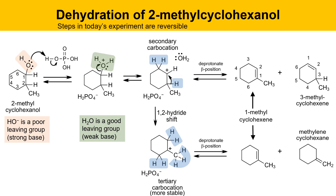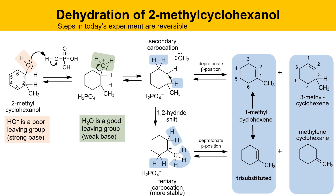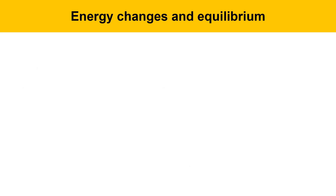These are the alkene products that could be produced in today's experiment. 1-methyl cyclohexene is a tri-substituted alkene, whereas 3-methyl cyclohexene and methylene cyclohexane are both disubstituted alkenes. The tri-substituted alkene is more stable, so it will be the major product, while the disubstituted alkenes will be minor products — this is Zaitsev's rule.